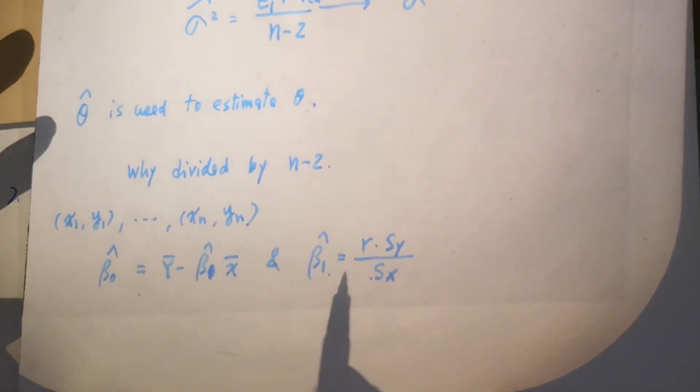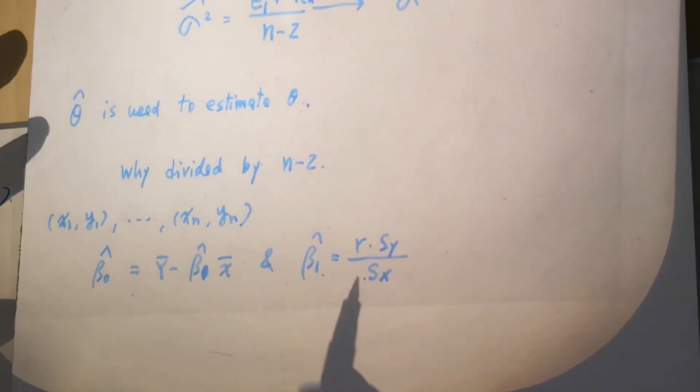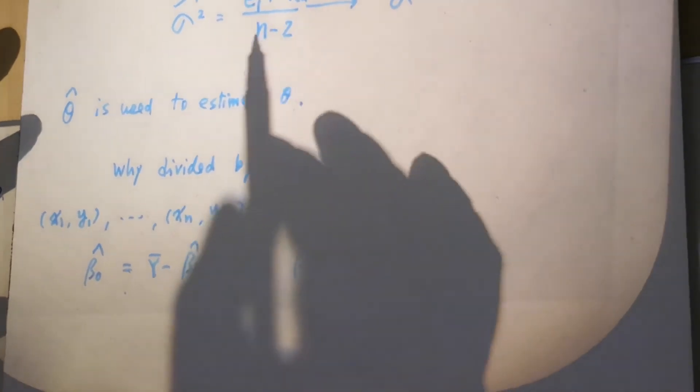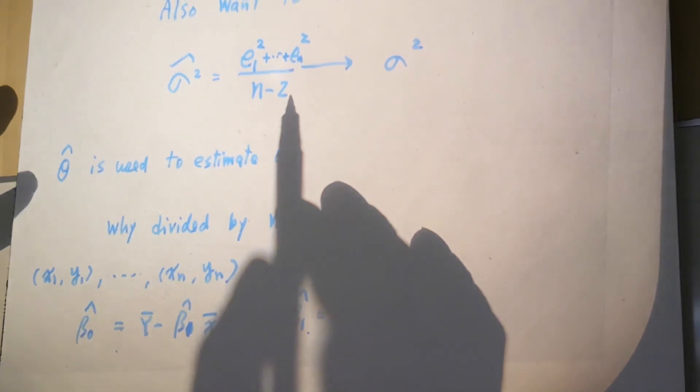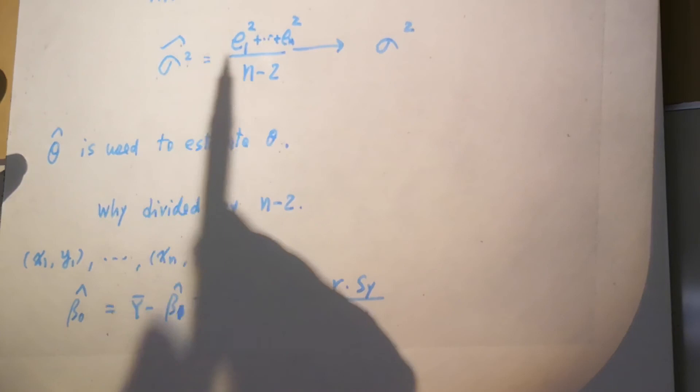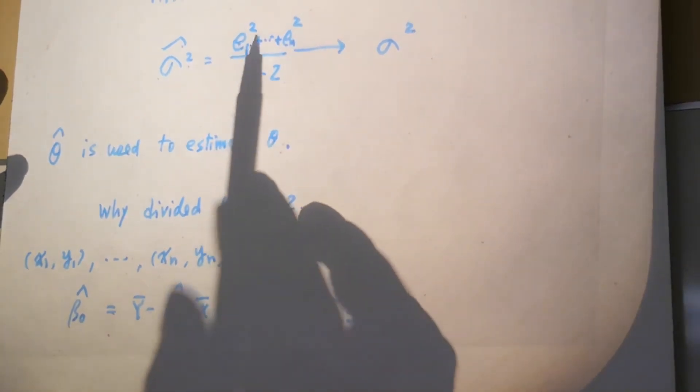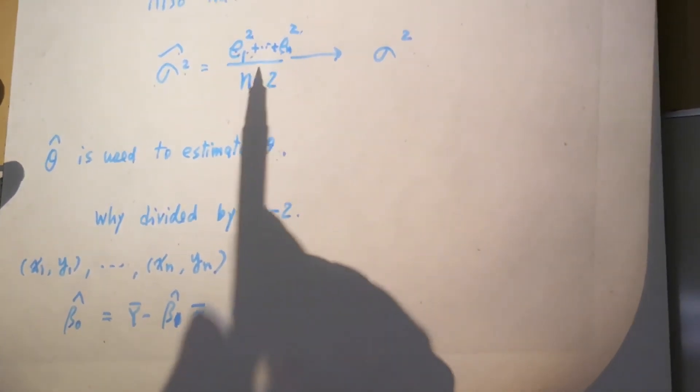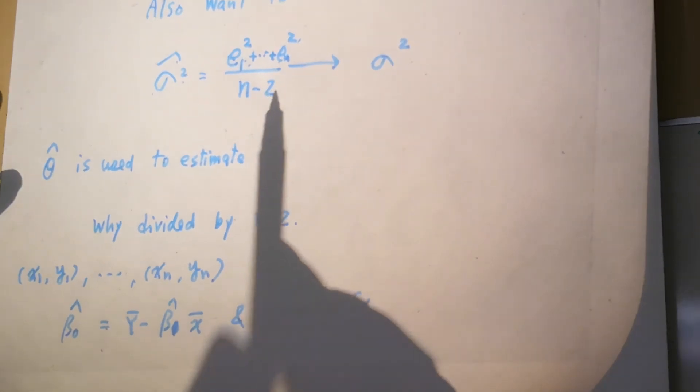Therefore, you lost two degrees of freedom. You divide by n-2 because only n minus 2 directions can generate variability. So σ̂² is estimated by e₁² + ... + eₙ² over n minus 2.